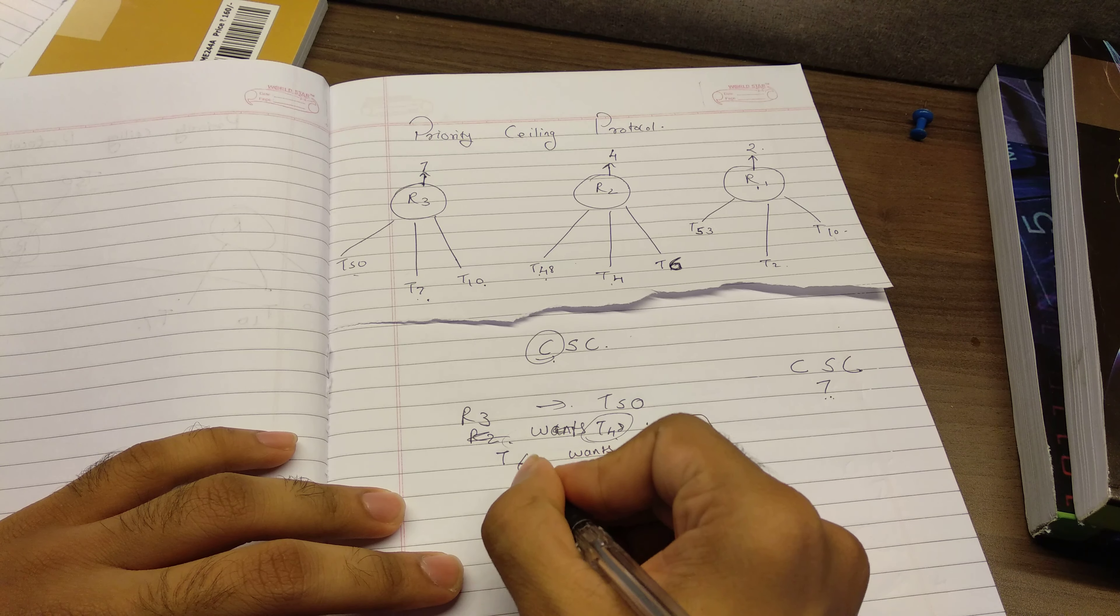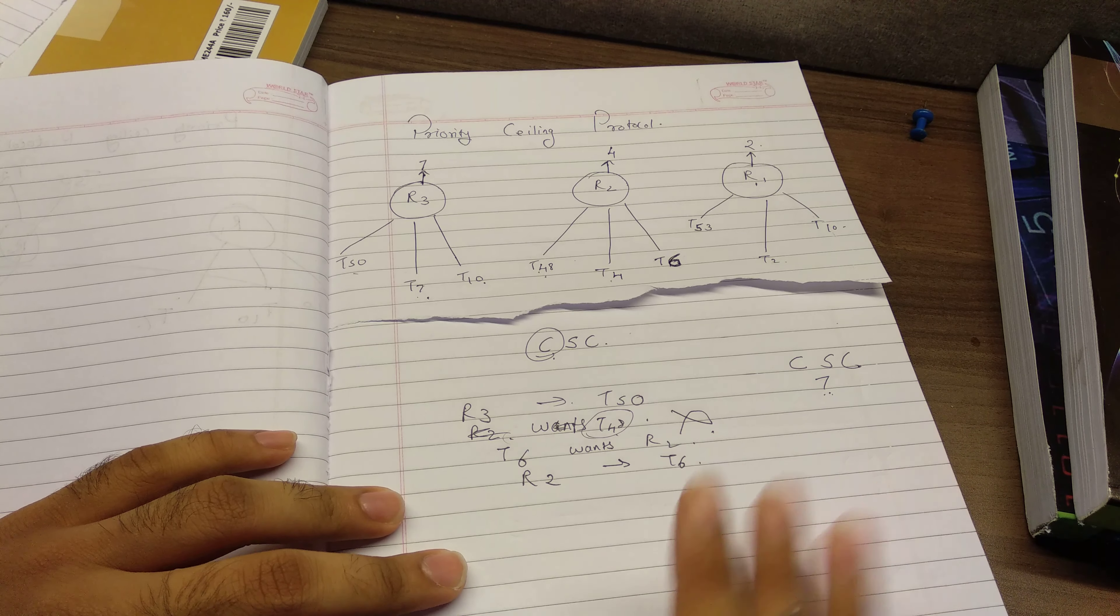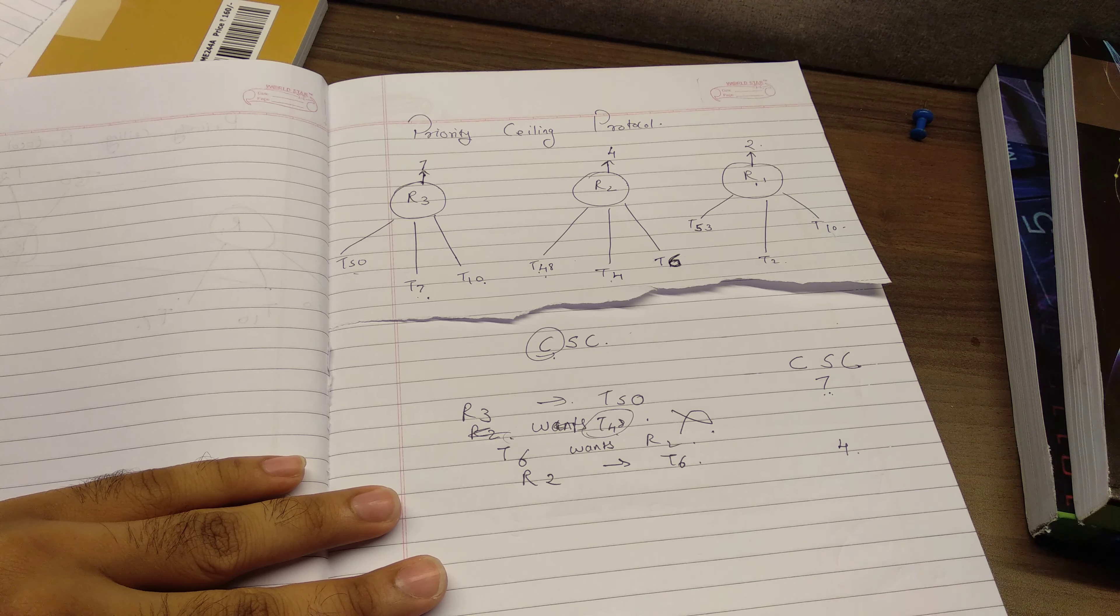So R2 is going to T6. Now my current system ceiling has changed completely. Now it is 4.